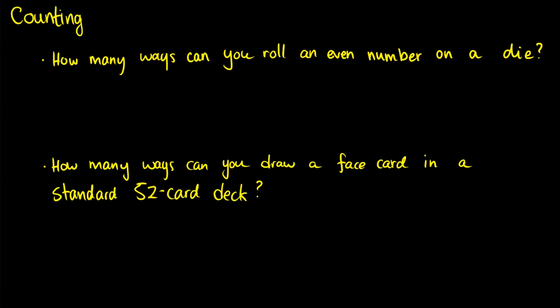So first, a very easy question. How many ways can you roll an even number on a six-sided die? So let's just specify this, that this is for sure six-sided. Well, which even numbers do you see on a six-sided die? You see the numbers two, four, and six. So there's three different ways that we can roll an even number on a six-sided die.